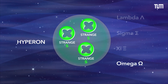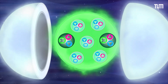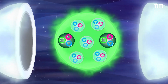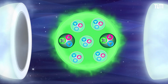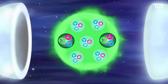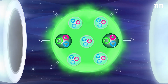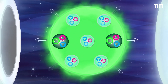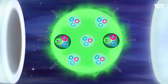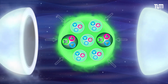To check whether neutron stars contain hyperons, we need to know more about the forces between the particles. For a given mass, repulsive forces increase the radius, while attractive forces decrease it.